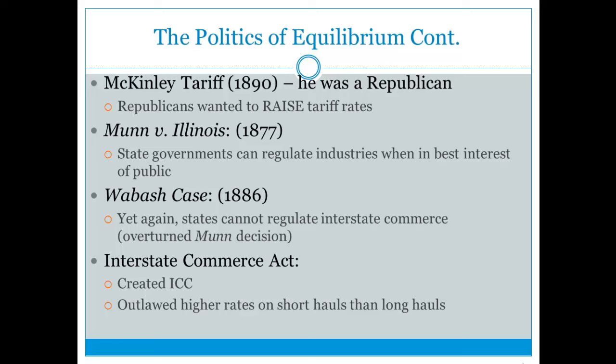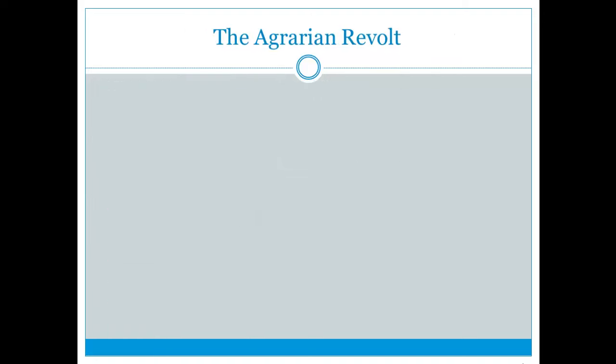What that means is: railroad companies could not charge more for a short trip like Buffalo to Rochester than for the longer Buffalo to New York City trip on the same track. Railroads also had to publish their rates.